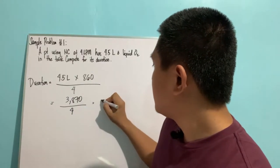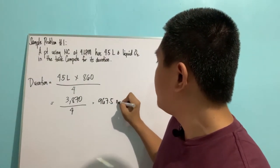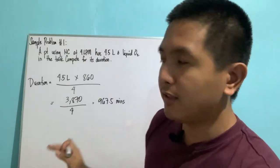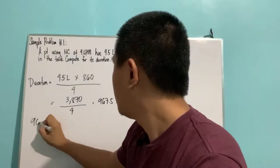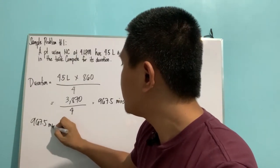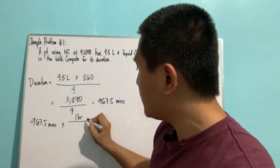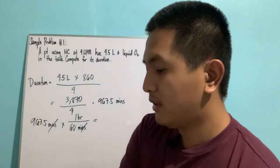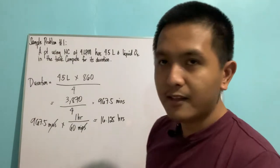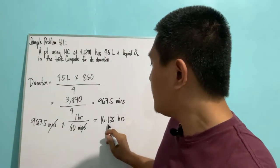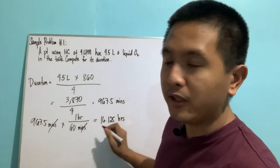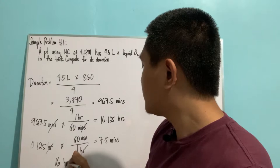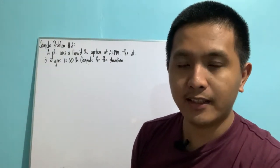Using a calculator: 4.5 multiplied by 860 gives us 3,870. Divide by 4 and we get 967.5 minutes. In your licensure exam you may be required to convert this into hours. 967.5 divided by 60 is 16.125 hours. Convert the decimal: the duration for 4.5 liters of liquid oxygen running at 4 liters per minute is 16 hours and 7 minutes.